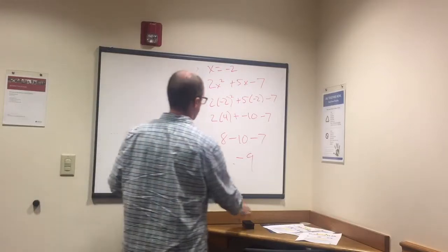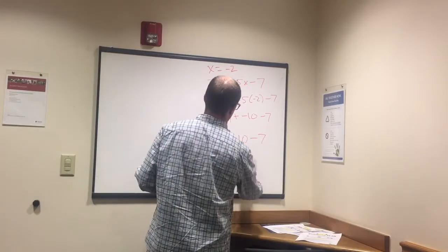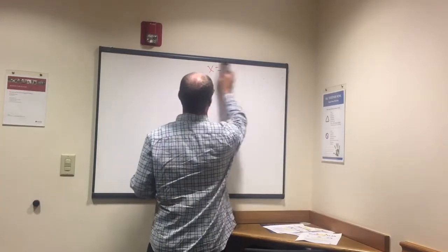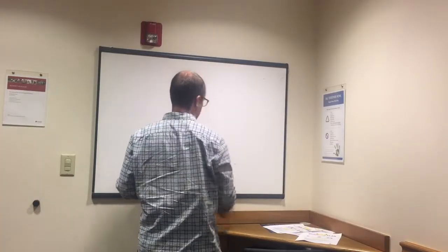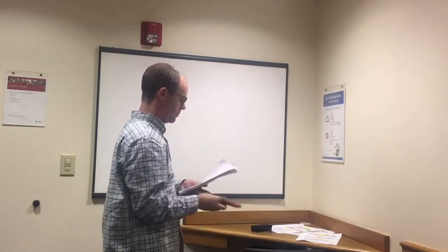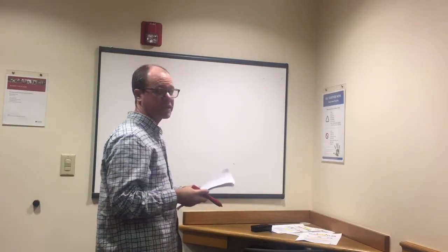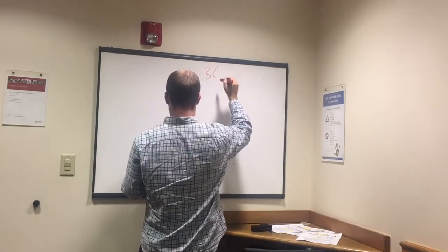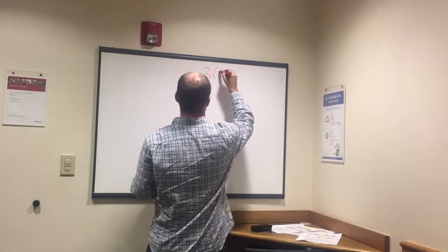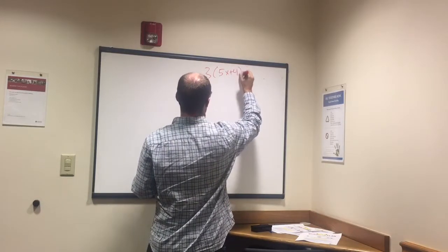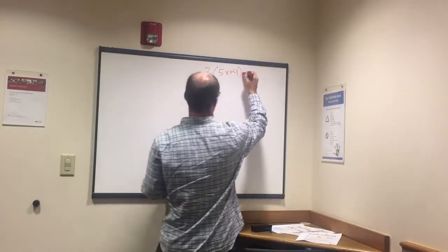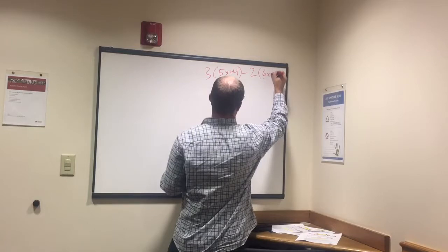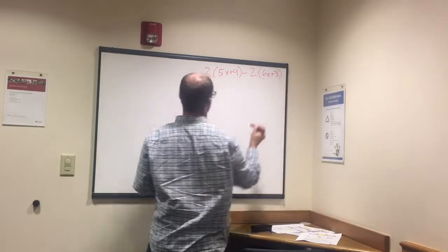Okay, so that's plug-in. Okay, next. So simplifying an expression. Alright, so write this one up here. 3 times 5x plus 4 minus 2 times 6x plus 3.